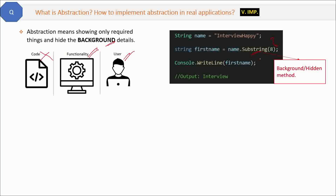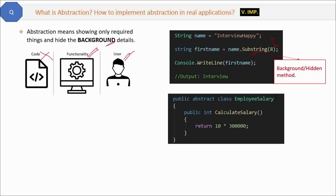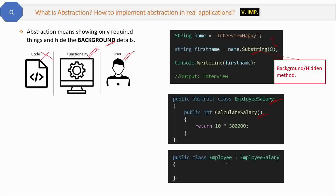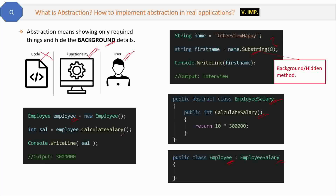Abstraction is a concept and you can implement it in different ways. One way is by using abstract classes and interfaces. For example, here is a base abstract class EmployeeSalary with a CalculateSalary method. Derived classes can use this method even without knowing how the internal logic works, and they will still get the proper output.